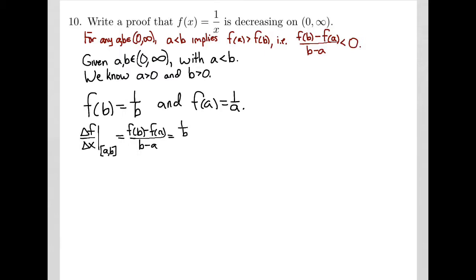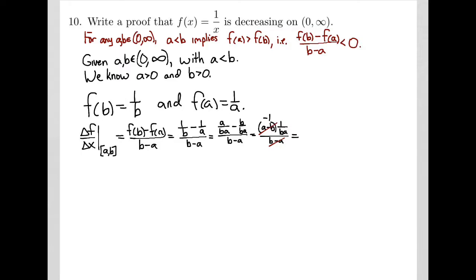Using our formula, f of b is 1 over b and f of a is 1 over a. To finish the simplification, those fractions need a common denominator, so I multiply the first by a and the second by b. Now I have a common denominator and can factor out, getting a minus b divided by ba, divided by b minus a. Since a minus b and b minus a differ only by a factor of negative 1, the slope between the two points at a and b equals negative 1 over ba.